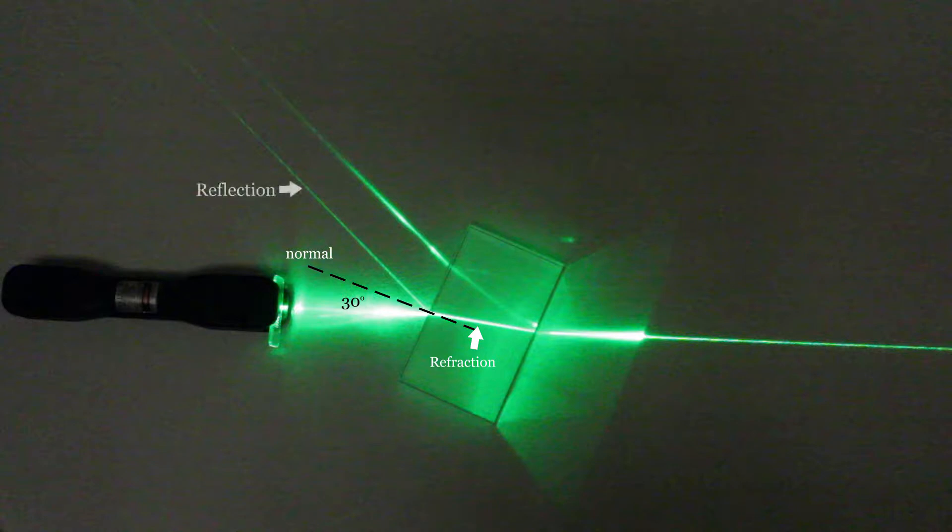One can also observe a faint reflected component obeying the law of reflection. Some of the light is transmitted and some is reflected. Note that our perception of the brightness of the beam gives us a crude indication of the percentages of light that are reflected and transmitted. The exact values depend upon the indices of refraction of the two substances and also upon the angle of incidence.